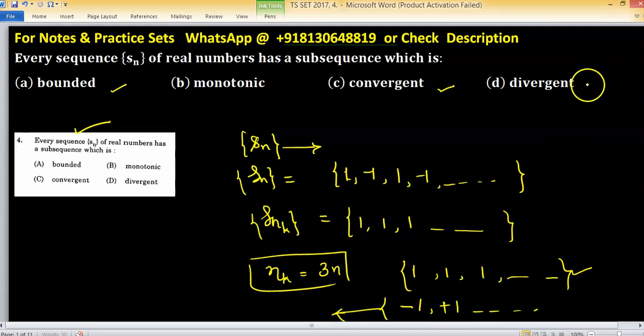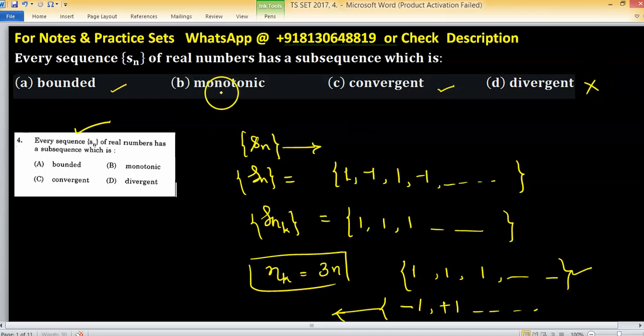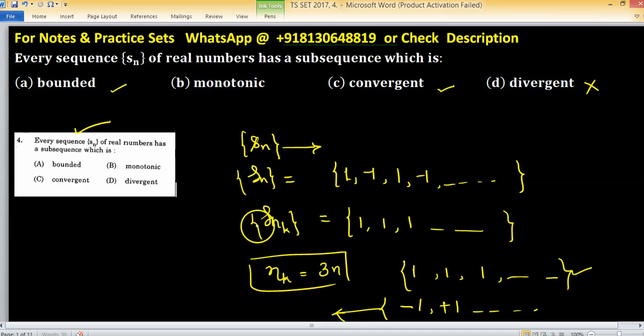You can consider another sequence like this type. You can take 1 plus 1 upon n. This is monotonic type and this sequence has convergent subsequence.